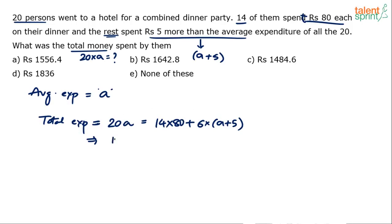Let's simplify this. 20a minus 6a will be equal to 14a. 14a equals to what? 14 into 80 is 800 plus 320, 1120. And 6 into 5 is 30. 1120 plus 30 is 1150. So basically 14a equals to 1150. We have to find out 20a is equal to what. Cross multiplying you get your answer.